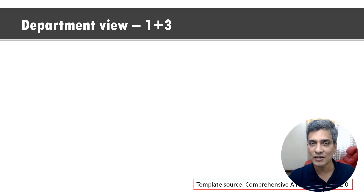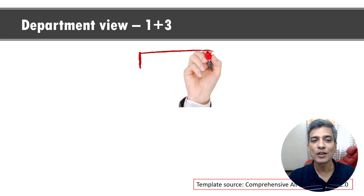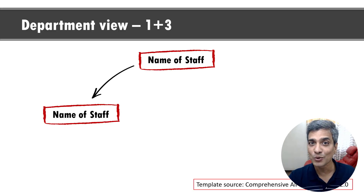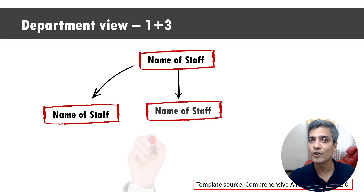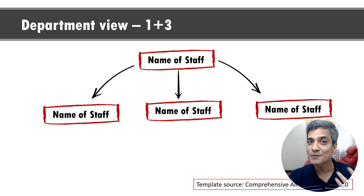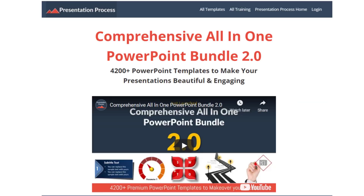Then we show the second level with three members in each of the first levels. If you want to elaborate on one section, you can use this animation. There are so many ways to use custom animation to draw viewers' attention to various attributes of your slide. If you're a busy professional who doesn't have time to create advanced custom animation, you can always go for templates from our all-in-one PowerPoint bundle version 2.0. The link is in the description box below the video.